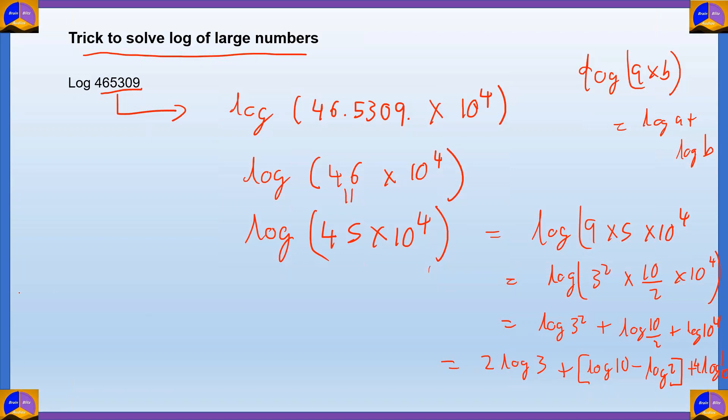And this becomes 2 log 3 plus, just to simplify, this is what we did in the last problem. So log 10 minus log 2 in order to get log 5 plus 4 log 10. Let's write it down here. So 2 into log 3 is 0.477 plus log 10 is 1 minus 0.3, that is log 2, and plus 4 times log 10 is 1.